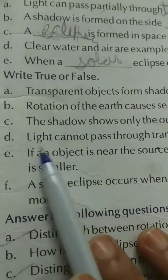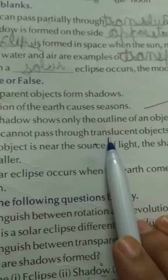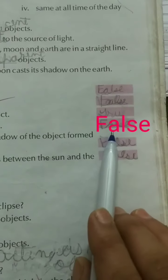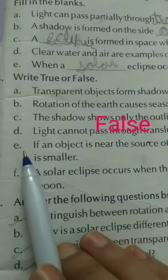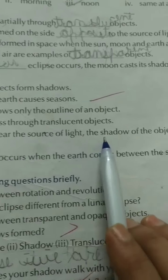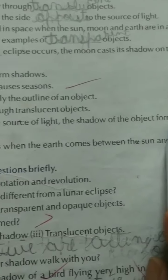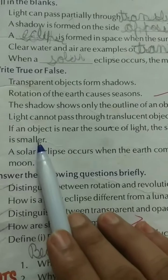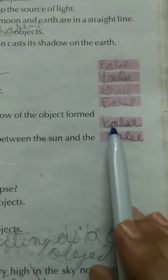Part D: Light cannot pass through translucent object. False. Part E: If an object is near the source of light, the shadow of the object formed is smaller. False.